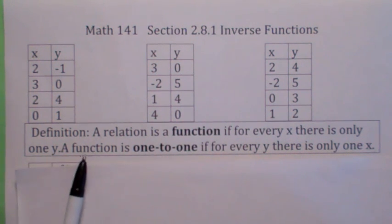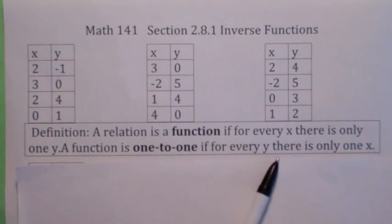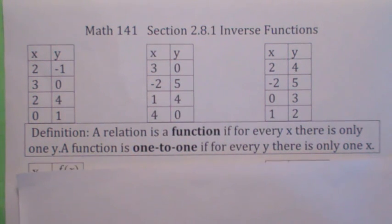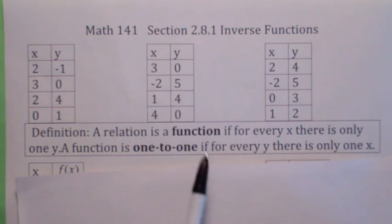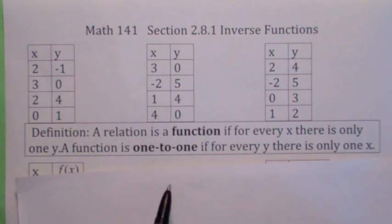But it turns out a new definition. A function is one-to-one if for every y there's one x. So although these last two are functions, this one would not be considered a one-to-one function because you've got the y value zero that has two different x values. Three goes to zero and four goes to zero.